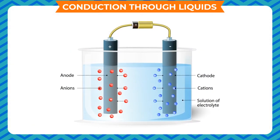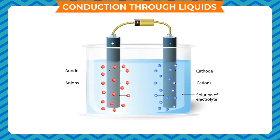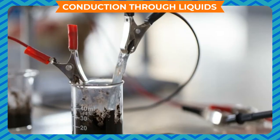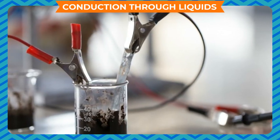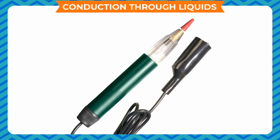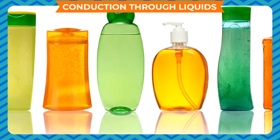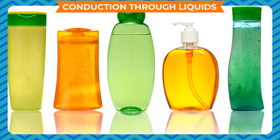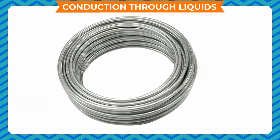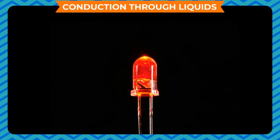Tap water also conducts electricity because it is not pure water and has some salts dissolved in it. The passage of electric current through a conducting liquid causes chemical reactions. The resulting effects are called chemical effects of electric current. We can use a tester to see if electricity can also pass through liquids. While testing liquids, you may find that the bulb does not glow as brightly as with metals, because the current through liquids is generally weak. So, for testing conductivity through liquids, we can use an LED in the circuit instead of a bulb.